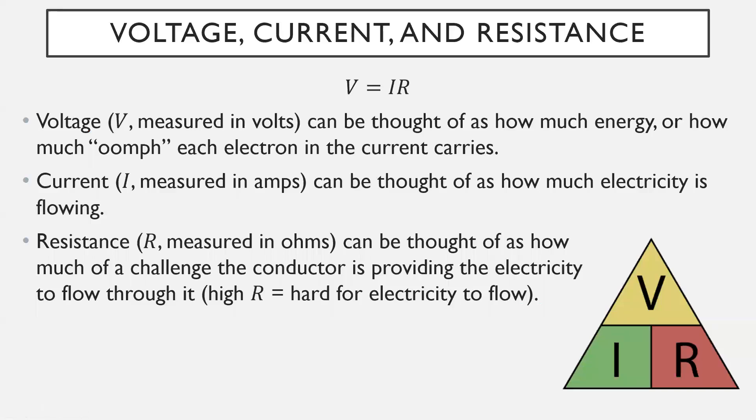Next up, voltage, current and resistance. You'll need to know this formula. I'm not going to give it to you. So you should have it written down on some sort of a cheat sheet that you put together for yourself. You can even draw this triangle because this triangle is useful. V equals IR. That's the relationship between voltage, current and resistance. Remember voltage, which is the V, measured in volts. This can be thought of how much energy or how much oomph each electron in the current carries. It's just how much push there is in the current electricity.